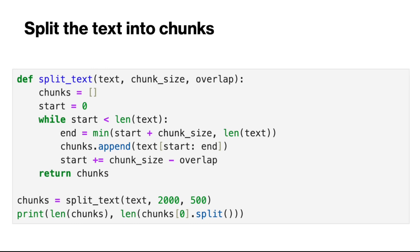Next, I have defined a function called SplitText to split the text into chunks with a given chunk size and overlap as input arguments. This function will return a list of text chunks. For this example, I used a chunk size of 2000 and an overlap of 500 characters.